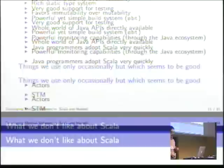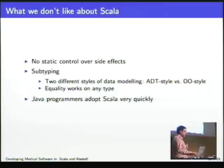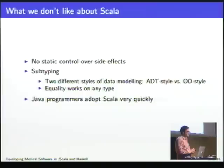The things we don't really like about Scala: you don't have the kind of static control over side effects that Haskell provides. Some would say that's a good thing — you can use mutable variables all over the place — but if you're accustomed to Haskell, then you feel a bit unsafe because there are potentially unsafe things everywhere.